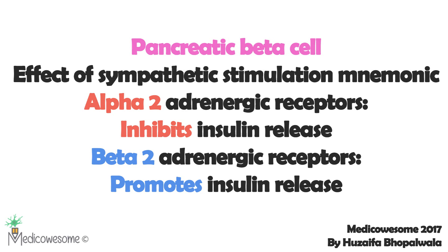Remember: B for beta-2, B for good boy — it increases insulin secretion. But alpha-2 is like the alpha and omega — it inhibits insulin secretion. So during normal epinephrine secretion, alpha-2's inhibiting effect is predominant, causing sympathetic stimulation to lead to overall inhibition of insulin secretion.